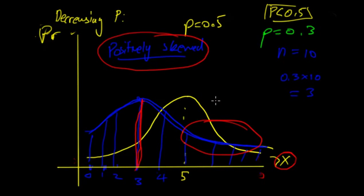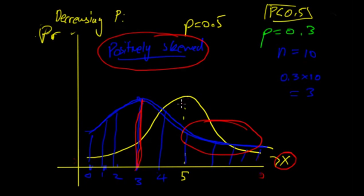Try to memorize these, but also think logically. What happens at p equals 0.3? You need to remember whether it's positively skewed, negatively skewed, or symmetric. Thanks for watching, guys.